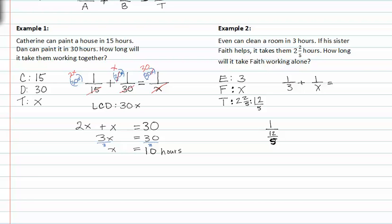Dividing a fraction by a fraction, so it would be five over twelve. Our LCD is going to be twelve x.